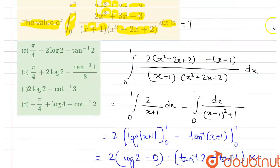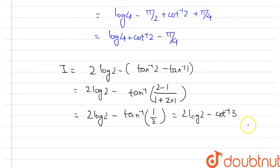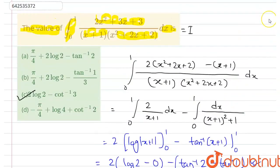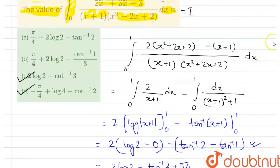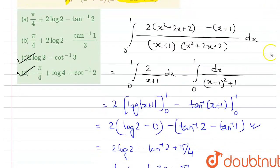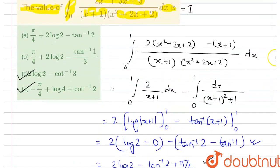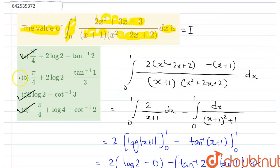Now we check the options. One option is 2 log 2 − cot⁻¹(3) — we have got I equals to this one. We also got I = log 4 + cot⁻¹(2) − π/4, which equals option D. Option D and this one are the same. We also have π/4 + 2 log 2 − tan⁻¹(2), which matches another option. So option A, C, and D are correct, but option B is not correct.